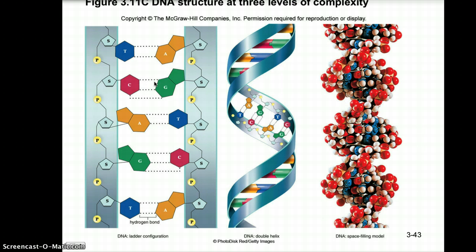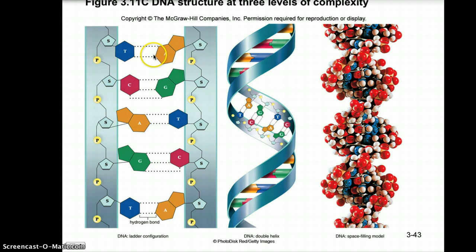In DNA, the alternating backbone is sugar-phosphate-sugar-phosphate, with adenine bonding to thymine and cytosine bonding to guanine in the middle. These bonds are hydrogen bonds — the weakest bond type we have studied — which is significant. We will discuss why a weak bond is important here when we get into molecular genetics and DNA replication later in the year.